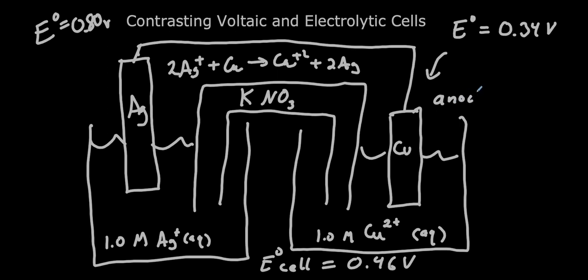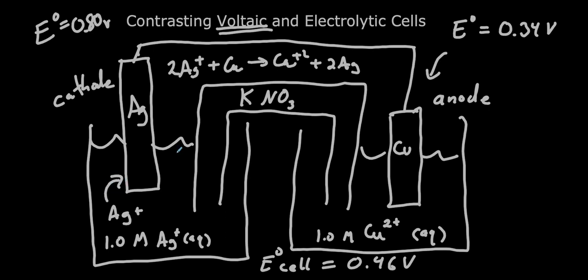Let's label this as the anode and this as the cathode, and emphasize that we're talking about a voltaic cell — one where the reaction is spontaneous in the forward direction, so we're able to push electrons with the energy given off by the reaction. Silver ions are going to be plated onto the cathode to form solid silver. And the copper is coming off to form copper ions. Since this is not an inert electrode — the copper is actually a reactant — the copper metal is going to be eaten up. We're eroding this electrode.